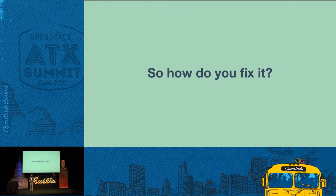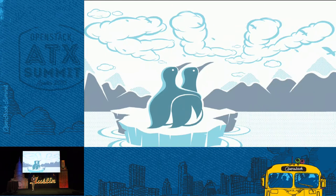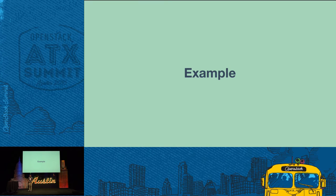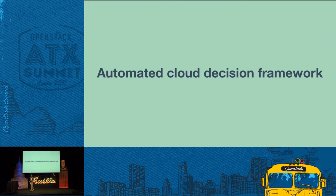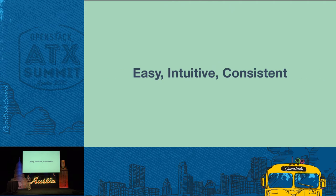So how do you fix it? How do you make both sides happier? One solution is you make it easier for your developers to utilize these infrastructure tools in the cloud so that they can focus on development and not worry about backups, redundancy, or uptime. NetApp IT had a similar issue and we solved it by going with a hybrid cloud architecture. We adopted an automated cloud decision framework and we made sure that we kept it easy, intuitive, and consistent for our developers to use these tools.